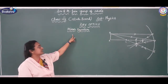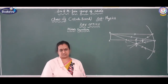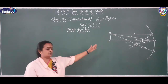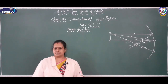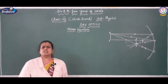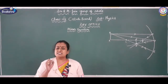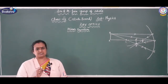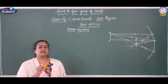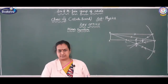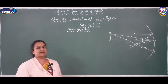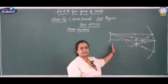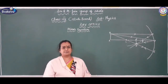Today we are going to discuss the mirror equation. I am going to derive the mirror equation with respect to a concave mirror. This mirror equation establishes the relation between object distance, image distance, and the focal length of a mirror. So let us derive the mirror equation. This is the ray diagram to understand the mirror equation.